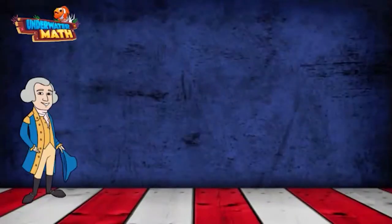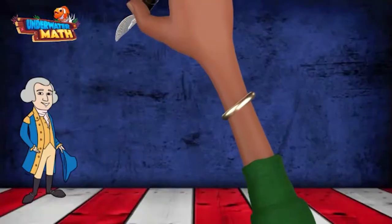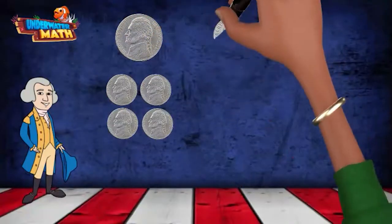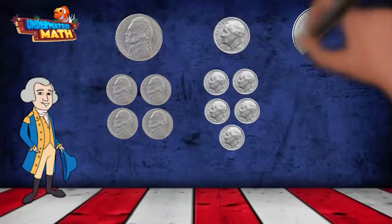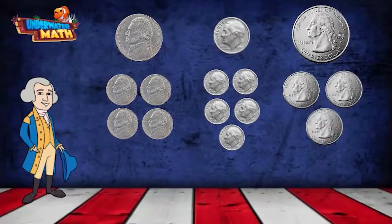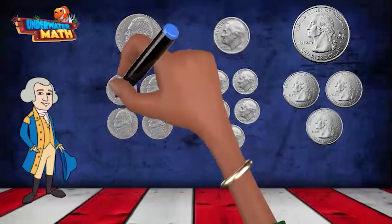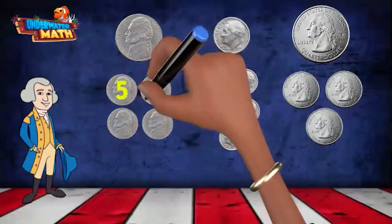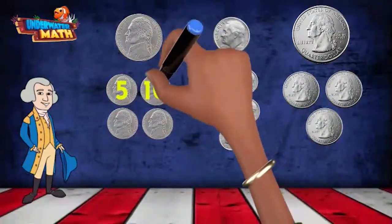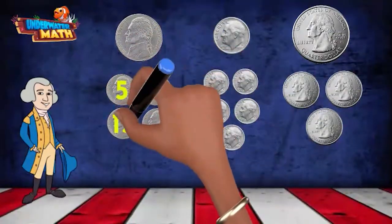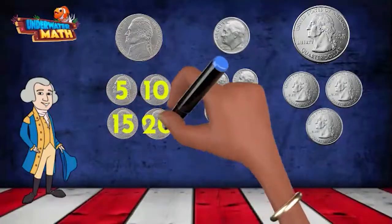Okay, so how about counting nickels, dimes, and quarters? That's easy — we need to skip count. With a nickel, we skip count by fives, like this: 5, 10, 15, 20. Four nickels is equal to 20 cents.